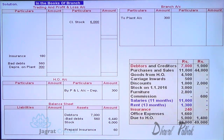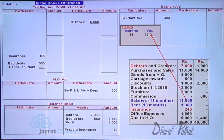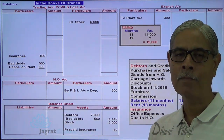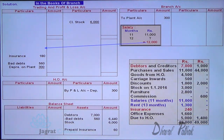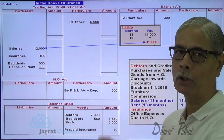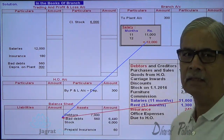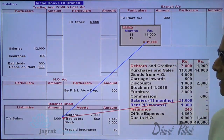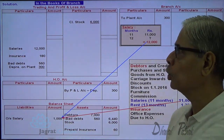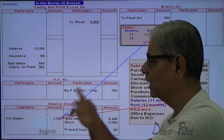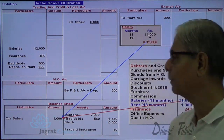Hidden adjustment: salary was paid for 11 months = 11,000. Therefore, 1 month's salary is outstanding. Full year salary = 12,000, so outstanding salary = 12,000 − 11,000 = 1,000. The full 12,000 salary is debited to the profit and loss account, and the 1,000 outstanding salary appears on the liability side of the balance sheet.